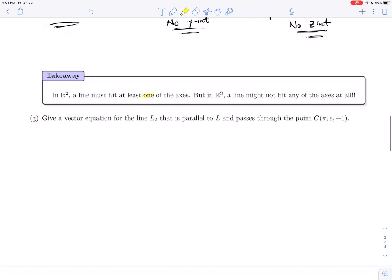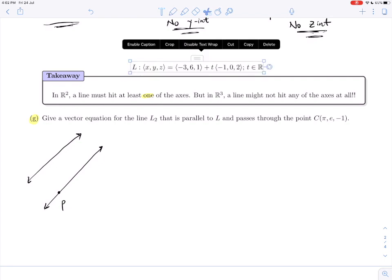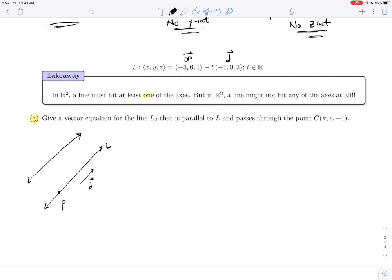We have one last part to our example, part G. We're asked to give a vector equation for a line L₂ that is parallel to L and passes through point C. Let's do a little diagram. We know our L. We know our equation—this had OP here, so our point P, this is our direction vector D. This is our equation of L. We want another line L₂—we want it to be parallel to L, but we want it to pass through point C instead. To create the vector equation of a line, we need any point on the line and any vector parallel.